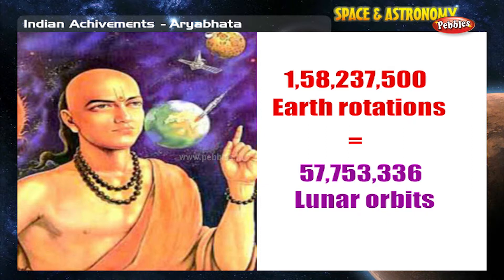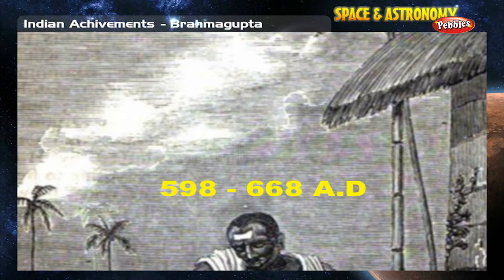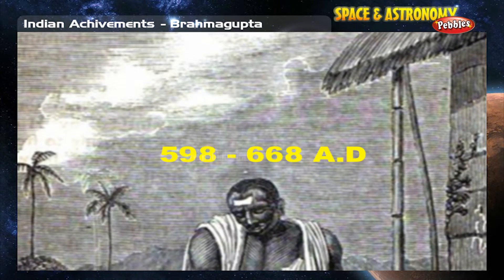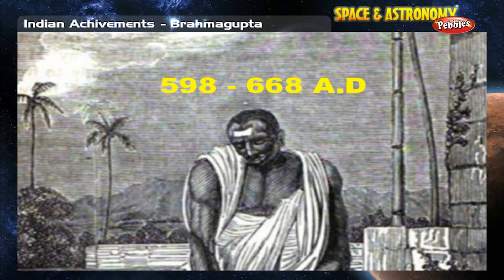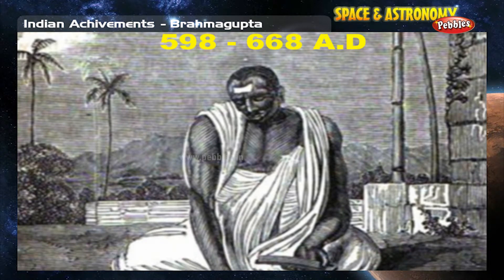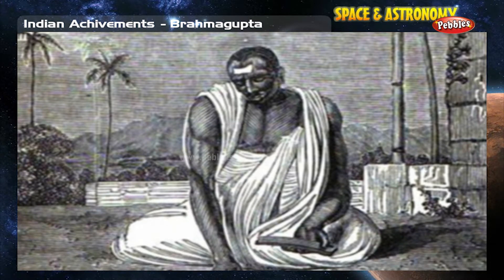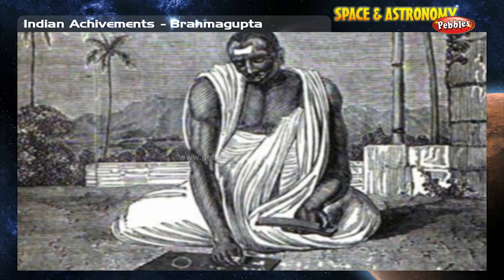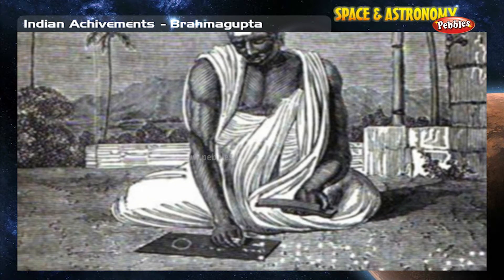Aryabhata wrote that 1,58,22,37,500 rotations of the Earth equal 5,77,53,336 lunar orbits — an extremely accurate ratio and perhaps the oldest astronomical constant calculated to such accuracy. Brahmagupta was the head of the Astronomical Observatory at Ujjain and wrote the Brahmasphuta Siddhanta in 628 AD.